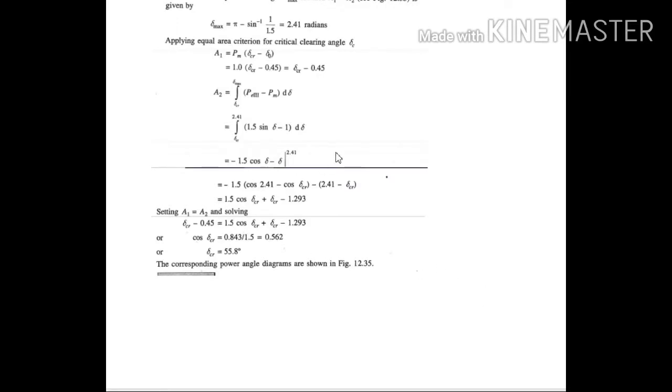That we have seen in the previous link. Continuing with that, equating area A1 equal to A2 and solving this, we obtain the expression for critical clearing angle as 55.8 degrees.